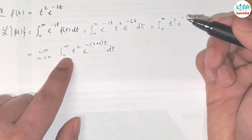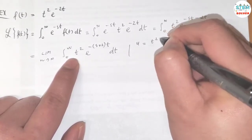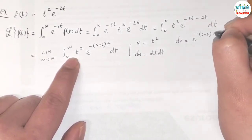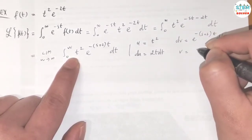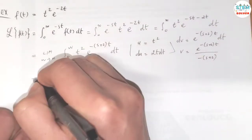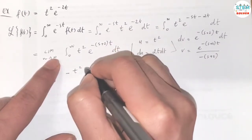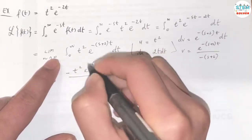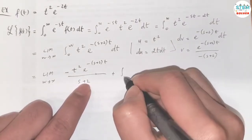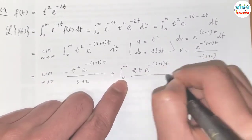So to evaluate this, we are going to use the integration by parts method. Let u equal t squared, then du equals 2t dt. dv equals e to the negative s plus 2 times t dt, then v equals e to the negative s plus 2 times t over negative s plus 2. So this becomes negative t squared times e to the negative s plus 2 times t over s plus 2, plus the integral from 0 to w of 2t e to the negative s plus 2 times t over s plus 2, dt.